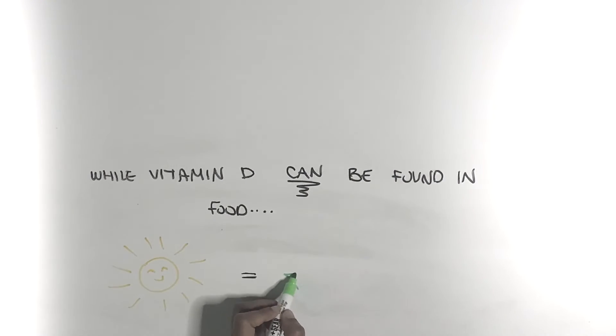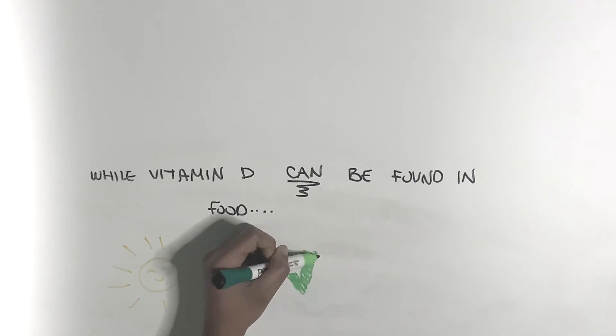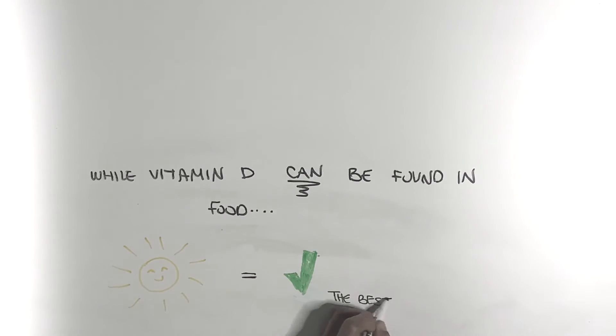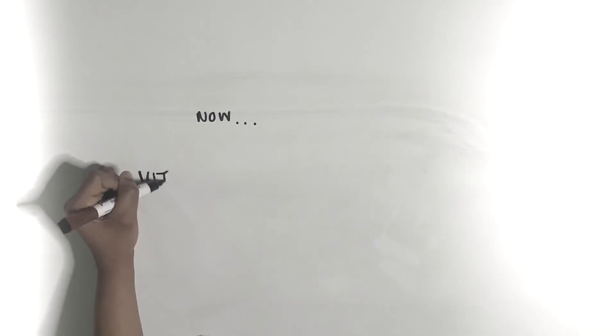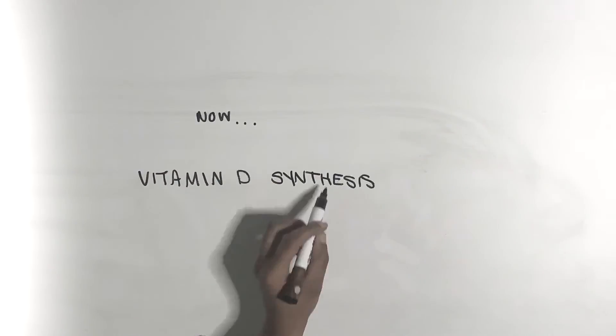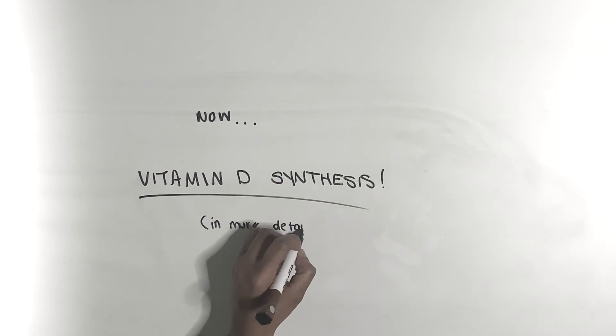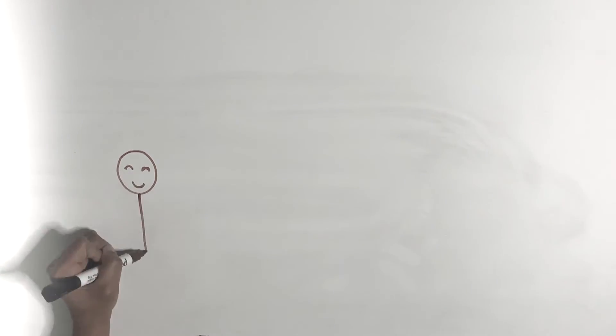While vitamin D can definitely be found in food sources, studies show that sunlight is the best and most effective source. Now let's go in a little bit deeper concerning vitamin D synthesis.